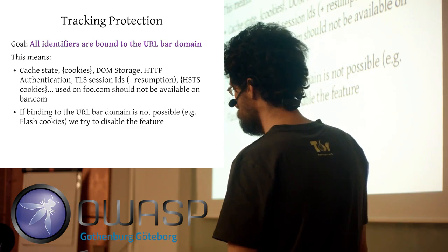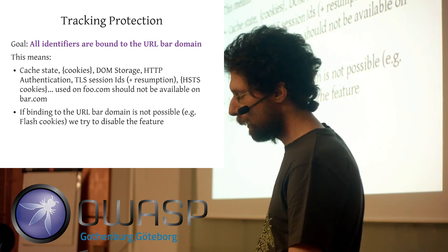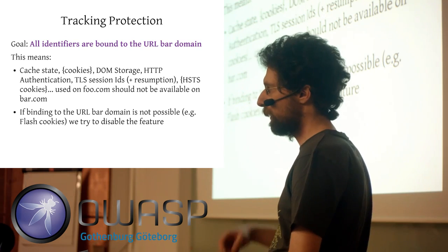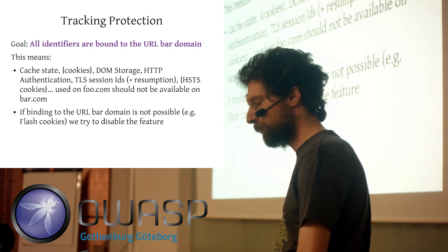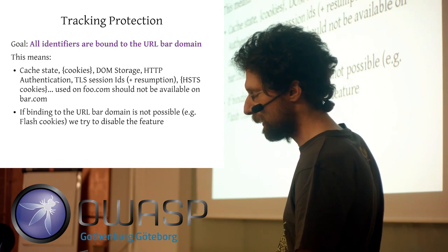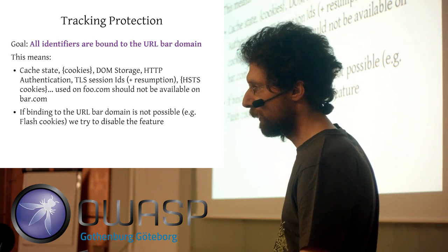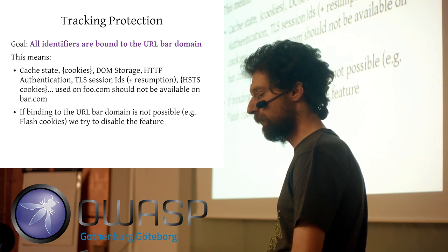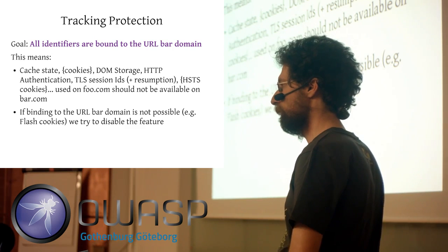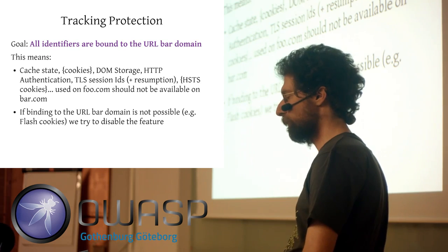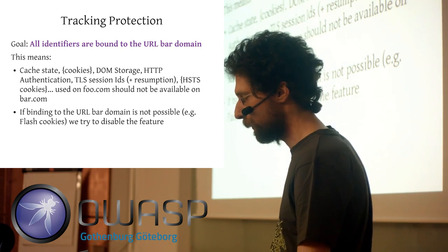Our solution is to separate state — everything saved on your computer while visiting foo.com, like cookies, cache state, DOM storage, or HTTP authentication credentials — should not be available to bar.com, a different domain. So all those identifiers are bound to the URL domain.